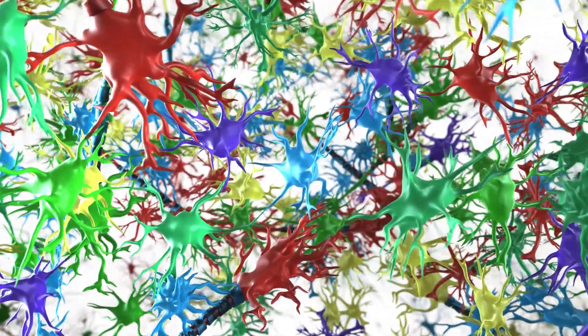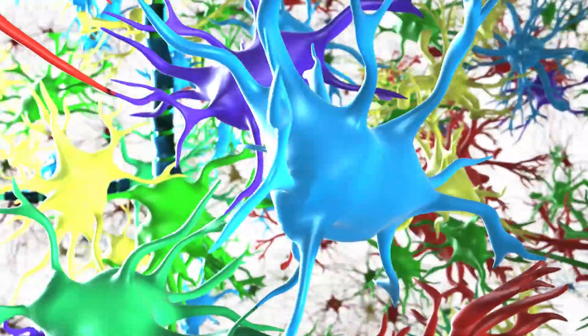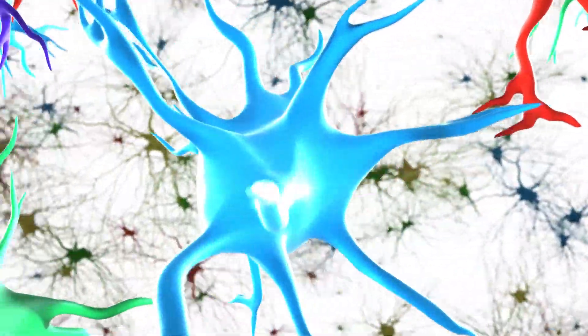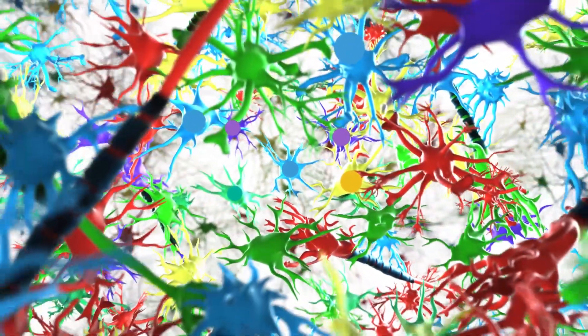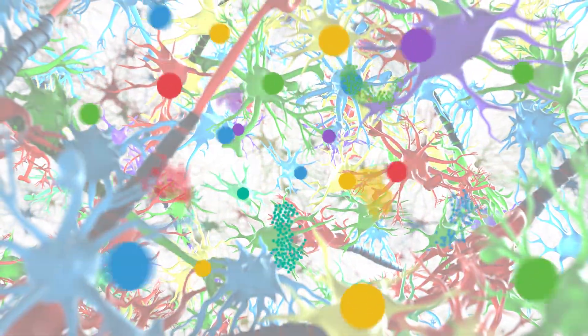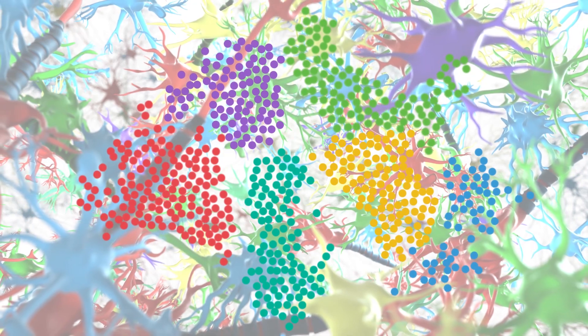10x Genomics technologies accelerate your discoveries in the central nervous system. When you can profile thousands of individual cells simultaneously, you obtain an unbiased look into their identities, diversity, and lineage.